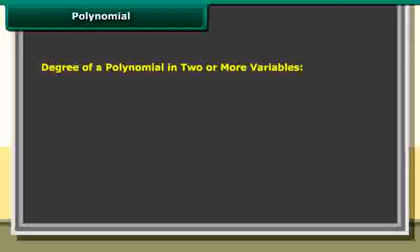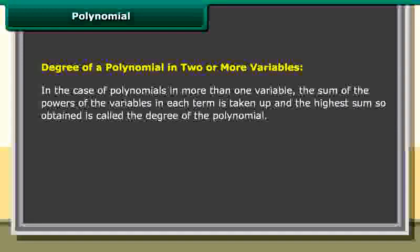Degree of a polynomial in two or more variables: In the case of polynomials in more than one variable, the sum of the powers of the variables in each term is taken, and the highest sum so obtained is called the degree of the polynomial. Monomials, binomials, and polynomials.